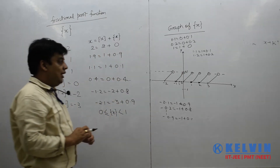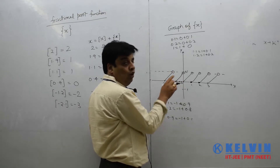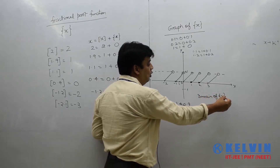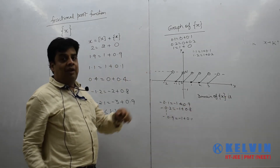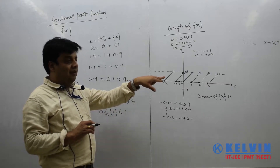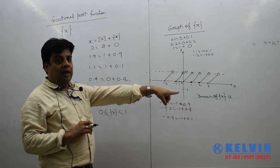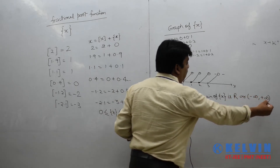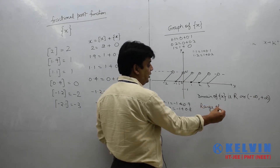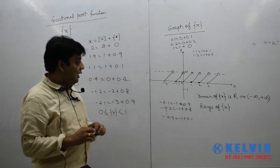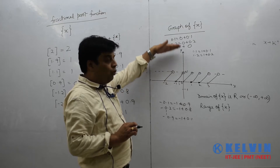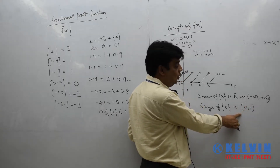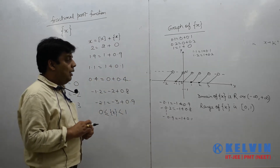So you can see the graph of fractional part x is always taking values between 0 to 1. Looking at this graph, the domain of fractional part x — meaning what values we can put in for x — we can put any real value of x. So this function is defined for all real values of x, meaning the domain is R, from minus infinity to plus infinity. The range of fractional part x is 0 to 1: 0 is included, but 1 is excluded.